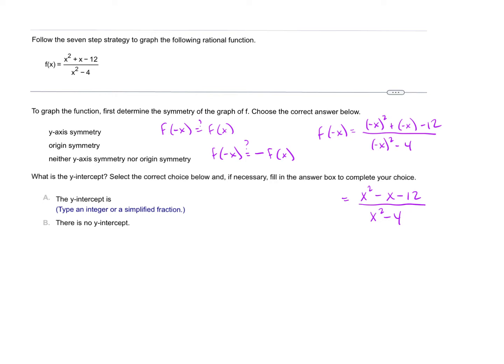To calculate the y-intercept, we take f of 0. Plug 0 in for x and calculate what y is when x is 0. We have 0 squared plus 0 minus 12 over 0 squared minus 4, which is negative 12 over negative 4, which is 3. So the y-intercept is 3.